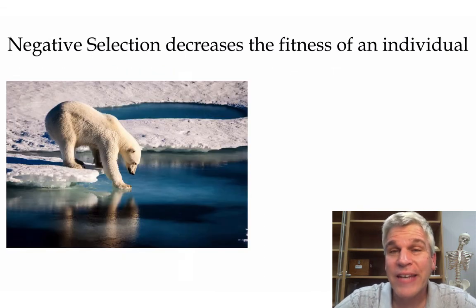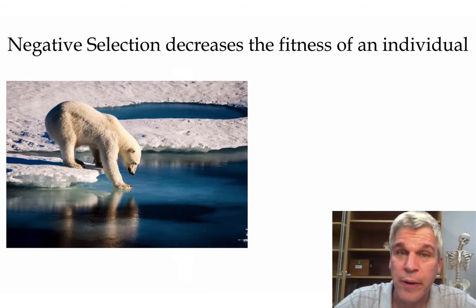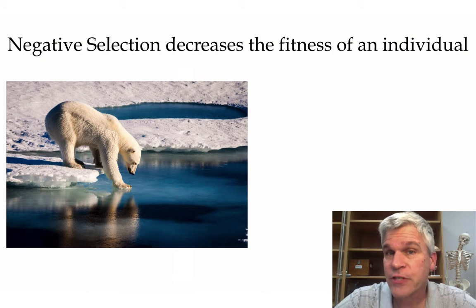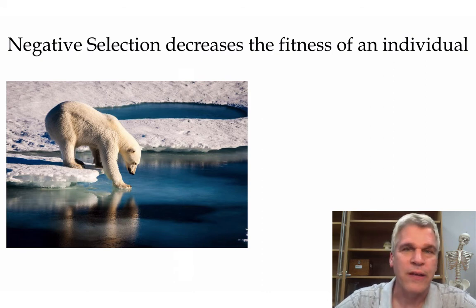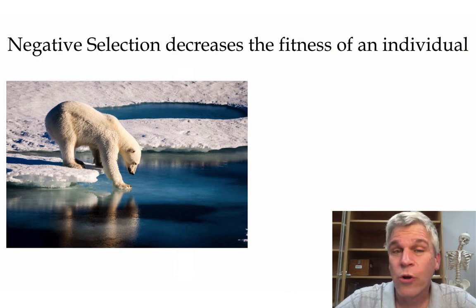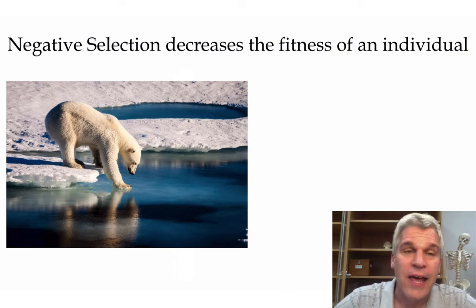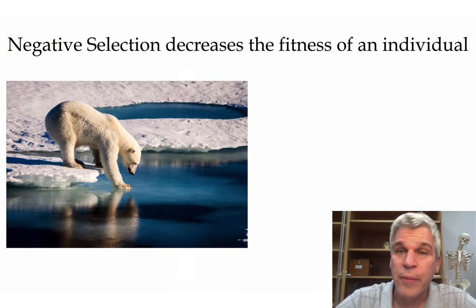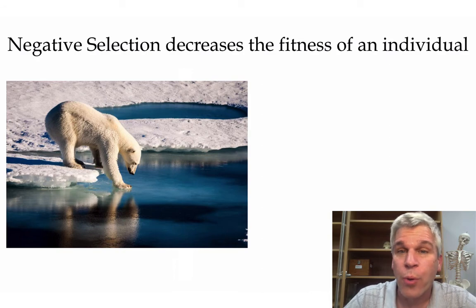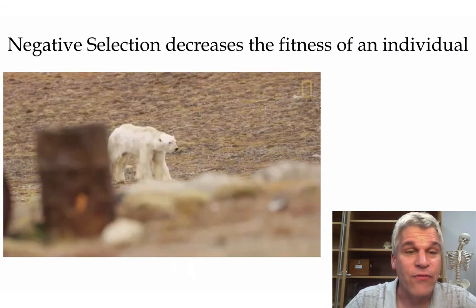An example of negative selection would be the polar bears. Polar bears walk around on the Arctic ice looking for seals, which are their main source of food — plenty of calories in seals. But as the earth is warming, especially in places like the Arctic, the ice is melting faster, so the source of food for the polar bears is decreasing, and more and more polar bears are dying from this.